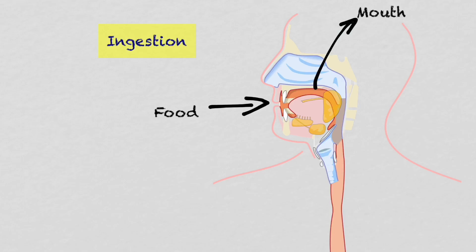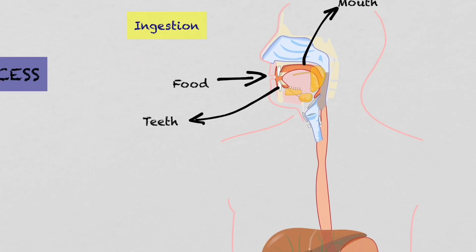The mouth is the first part of the digestive system. In the mouth we can find three accessory structures. The first one are the teeth. The teeth carry out the mechanical digestion of the food.